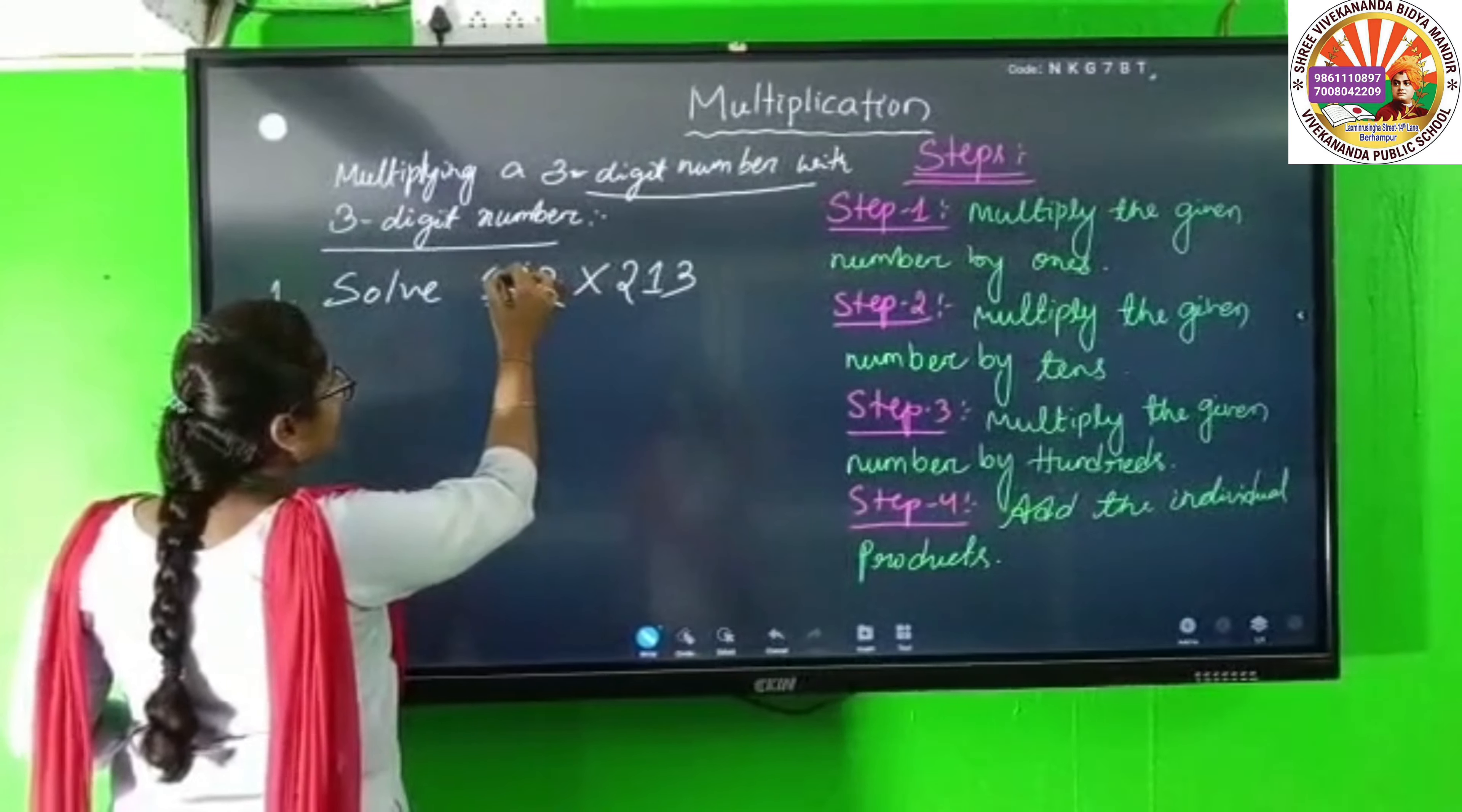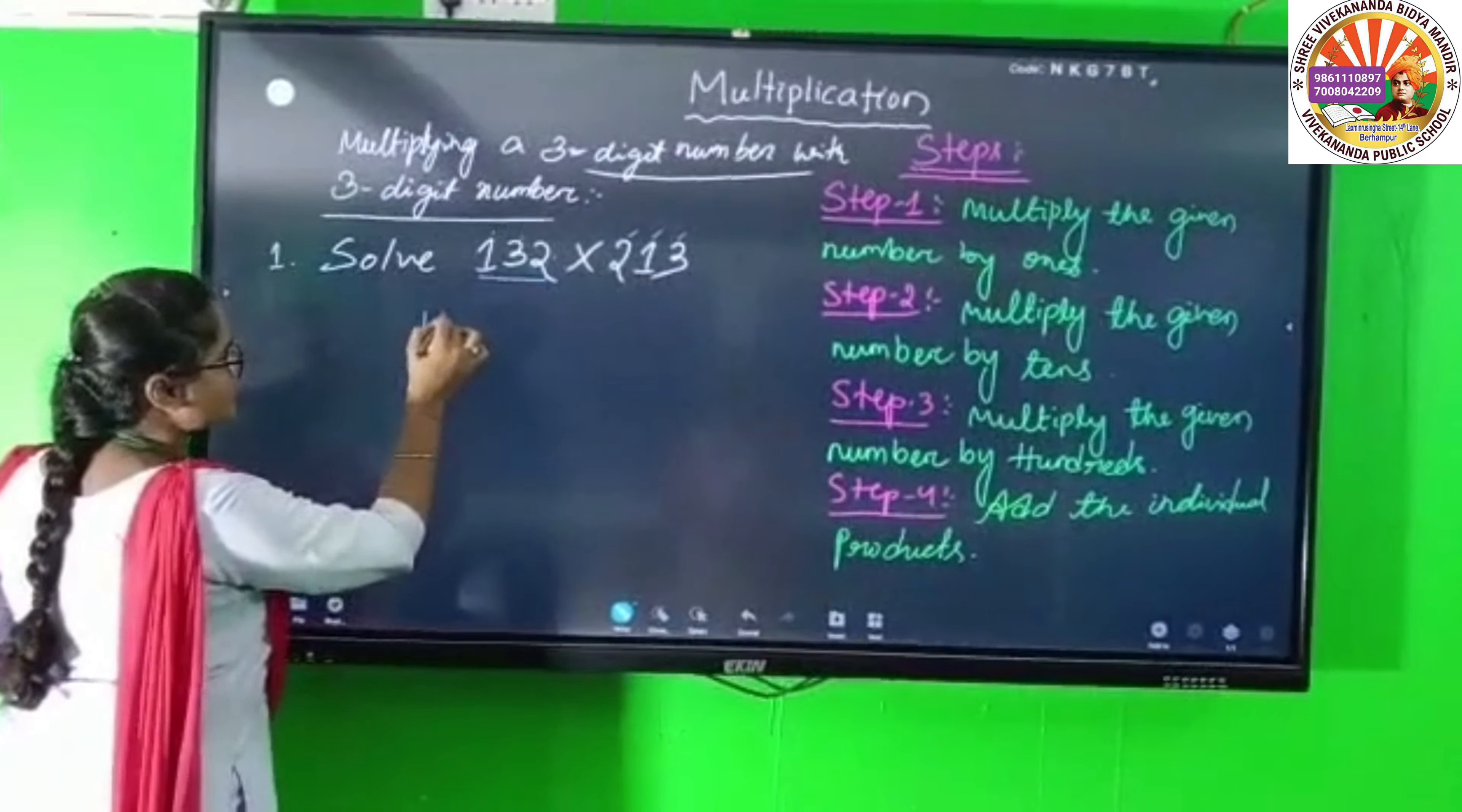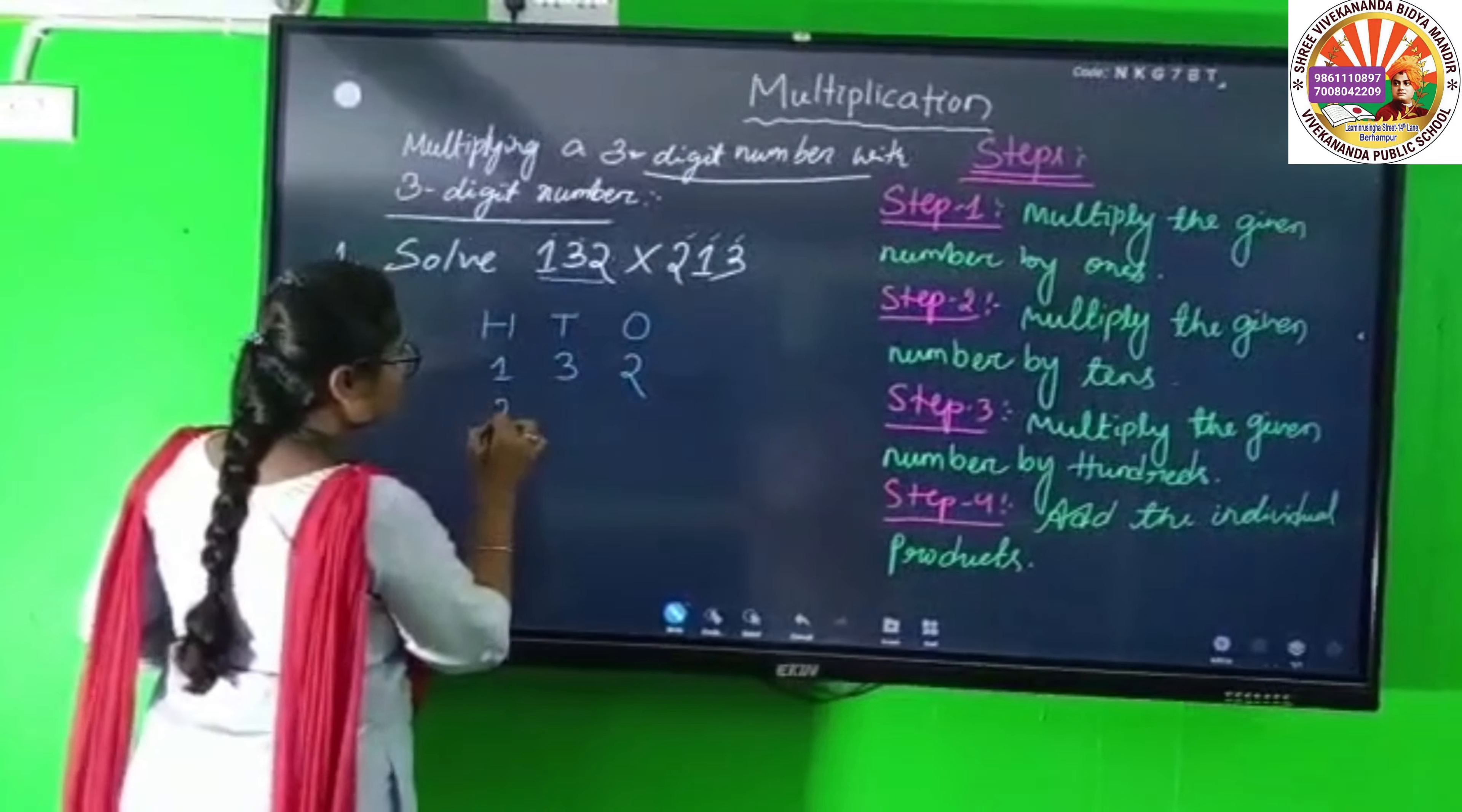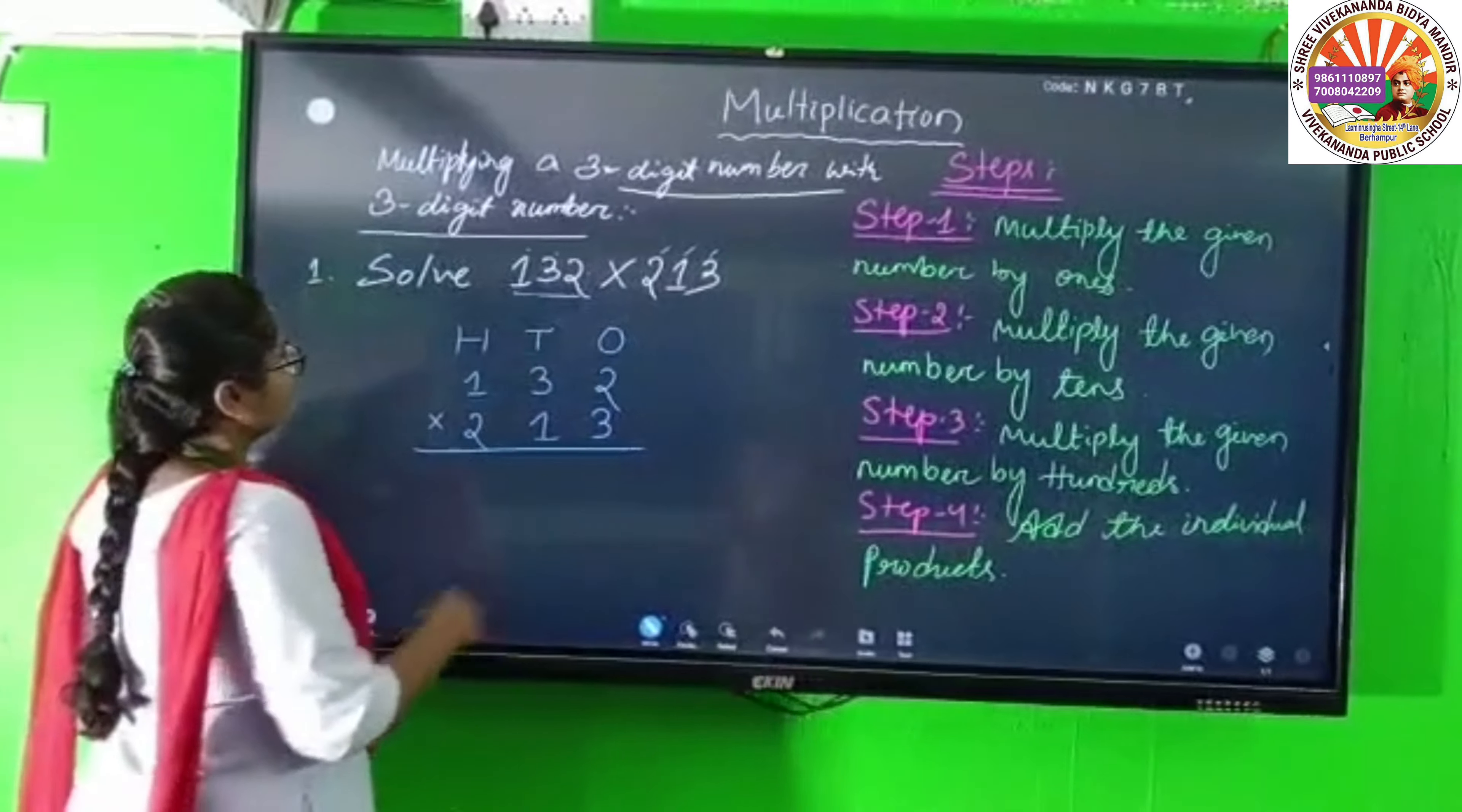Ones, tens, and hundreds. Here we have ones, tens, and hundreds - three rows. One, three, two. And two, one, three. Multiplication sign. Now remember, first multiply by ones.